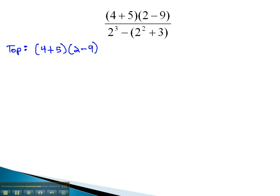Order of operations tells us to do the parentheses first. 4 plus 5 is 9, and 2 minus 9 is negative 7. Next, we can multiply. 9 times negative 7 is negative 63.